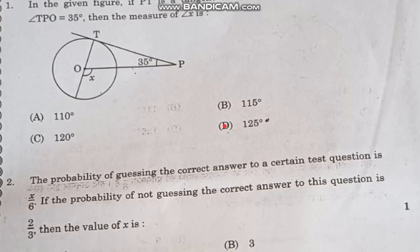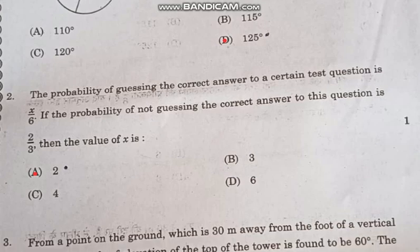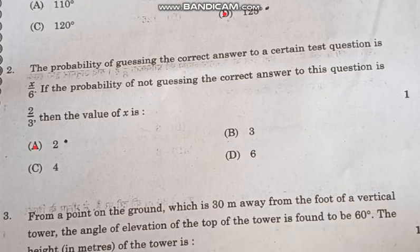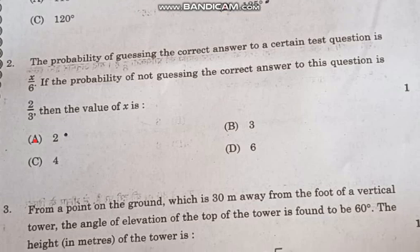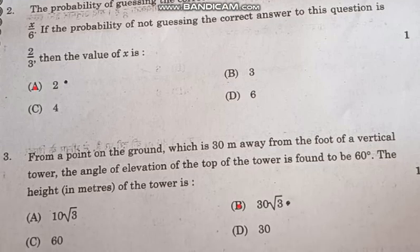Question number 2: The probability of guessing the correct answer to a certain test question is X by 6. If the probability of not guessing the correct answer to this question is 2 by 3, then the value of X is correct answer option A, 2.